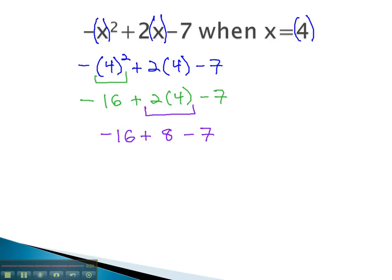Finally, order of operations allows us to do the addition and subtraction. Negative 16 plus 8 minus 7 is negative 15. By taking the known value and plugging it in for our variables, we can evaluate these polynomials at a given value.